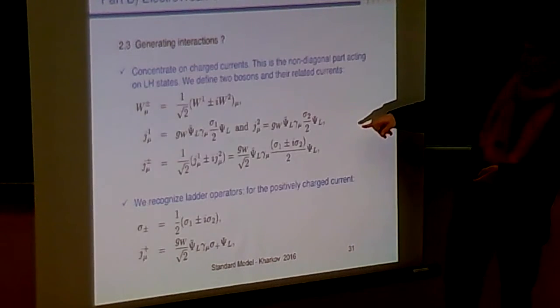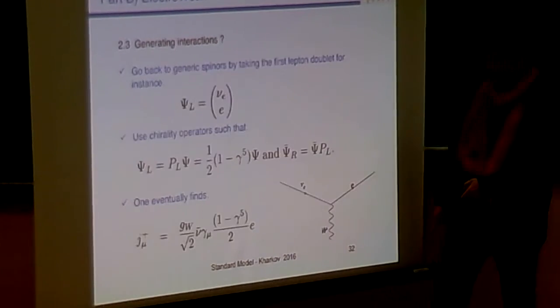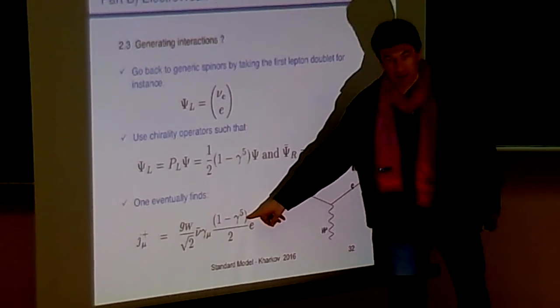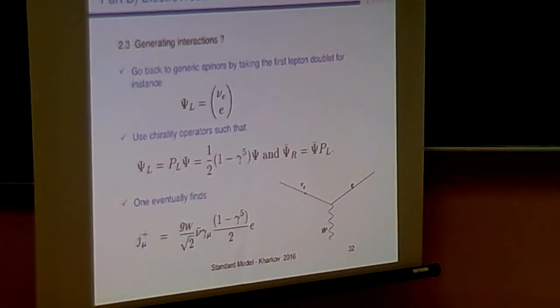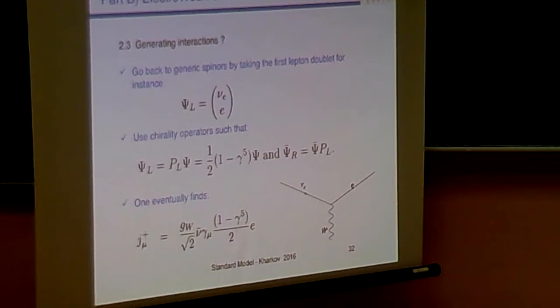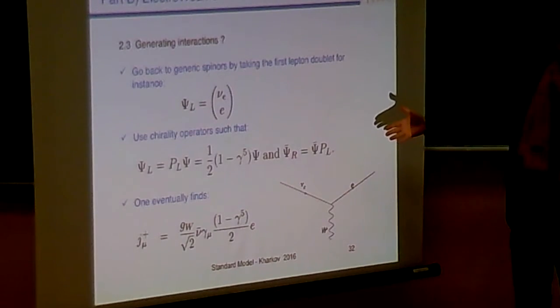If I'm injecting that into this current, I'm finding back this. And this is exactly what I was wishing for. We find back gamma mu times 1 minus gamma 5. Which we have seen this to be the covariant bilinear which is making the maximal parity violation. So we have just completed our task.